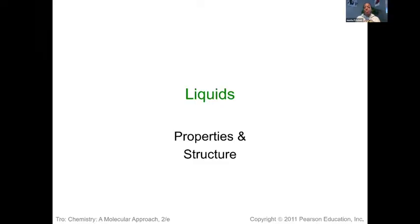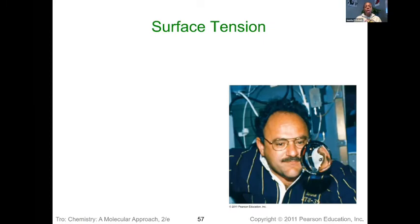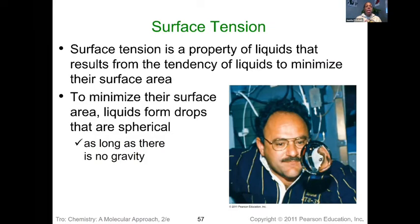During this video I'm going to be looking at a few different properties particular to liquids and seeing how intermolecular forces will impact those. The first property we're going to discuss is surface tension. Surface tension is a property that liquids hold that results from the tendency of liquids to minimize their surface area. To do this, liquids form drops that are spherical if there's no gravity in place. On earth, gravity means we end up seeing a layer of molecules that form on top of any liquid, and that surface tension can be measured accordingly.